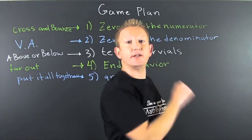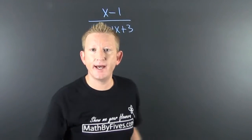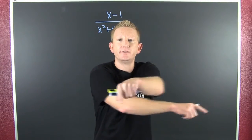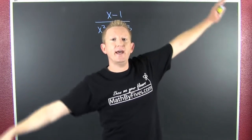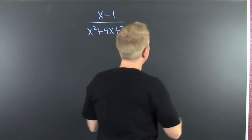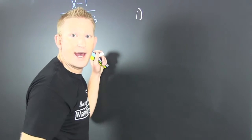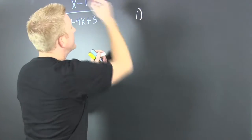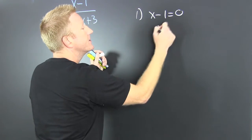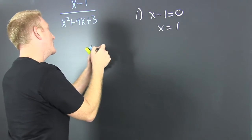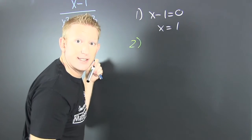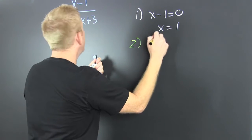Let's find the zeros of the numerator, zeros of the denominator, test our intervals, find our end behavior, and then graph. Here we go. Step one: I set the numerator equal to zero, and x turns out to be 1.